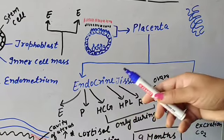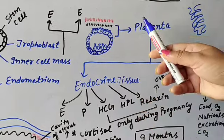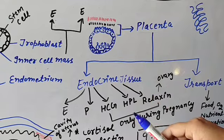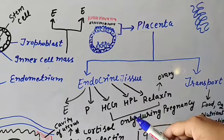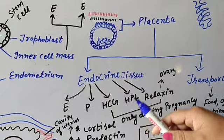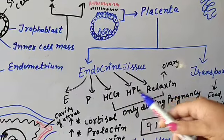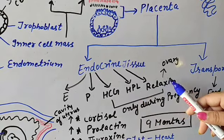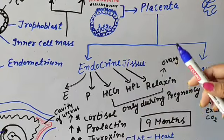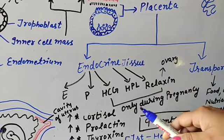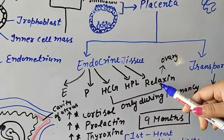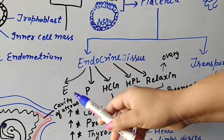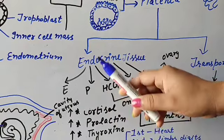These hormones are secreted by the placenta. An important point is that HCG, HPL, and relaxin are the three hormones produced only in the human female during pregnancy. Relaxin is released by the ovary in the later stage, while estrogen and progesterone are also secreted during pregnancy.